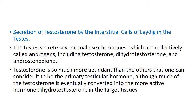Regarding the secretion of testosterone by the interstitial cells of Leydig in the testis: the testis secretes several male sex hormones, and collectively they are called androgens. Androgens include testosterone, dihydrotestosterone, and androstenedione. However, testosterone is so much more abundant than the others that it can be considered the primary testicular hormone.